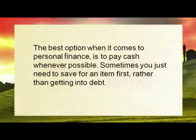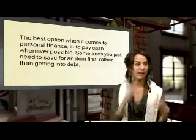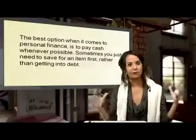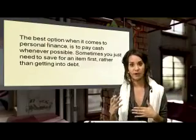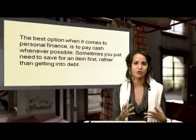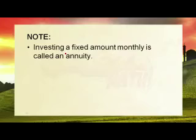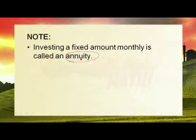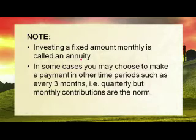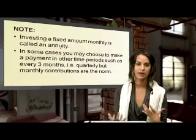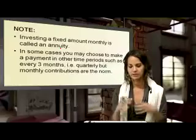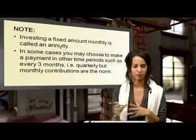The best option in personal finance is to pay cash, because when you plug in all your values, interest rates, and time periods, you end up paying close to double the original amount. They trick you by saying 'take it over five years,' but in five years you could have bought two of those. Investing a fixed monthly amount is called an annuity. You may sometimes pay every three months — quarterly — but monthly contributions are usually the norm.